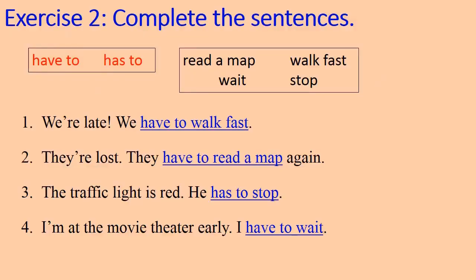This is my answer. Two: they're lost — they have to read a map again. Three: the traffic light is red — he has to stop. Four: I'm at the movie theater early — I have to wait. Now look at your paper and correct your work.